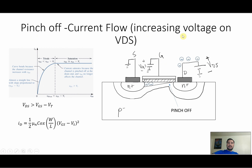Now let's see what happens when we increase the voltage on VDS. You're going to start going into saturation, and you're going to create a pinch-off right here. This pinch-off is going to limit the current going through the transistor, so you can't increase the current anymore — you're going to be saturated. In an ideal transistor, you're going to have a straight line, because the current is just limited and can't go beyond that.